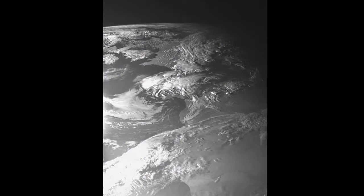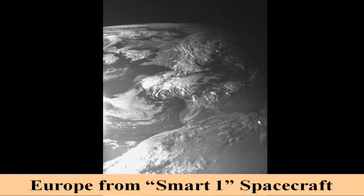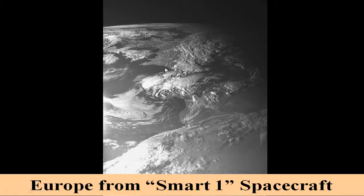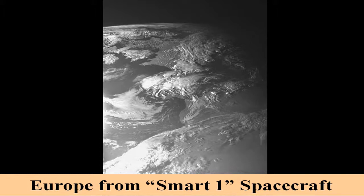Here's another look at Earth from the Smart One spacecraft. What we're looking at here is Europe — the coast of France, Africa, the Straits of Gibraltar, Spain, and the Mediterranean Sea. The Smart One spacecraft was going through many orbits, increasing orbits around the Earth using an ion engine. Its purpose is to look for the possibility of Earth-Moon debris from the formation of the Moon from the Earth, maybe 4.6 billion years ago. The Smart One spacecraft is slowly making its way to the Moon.